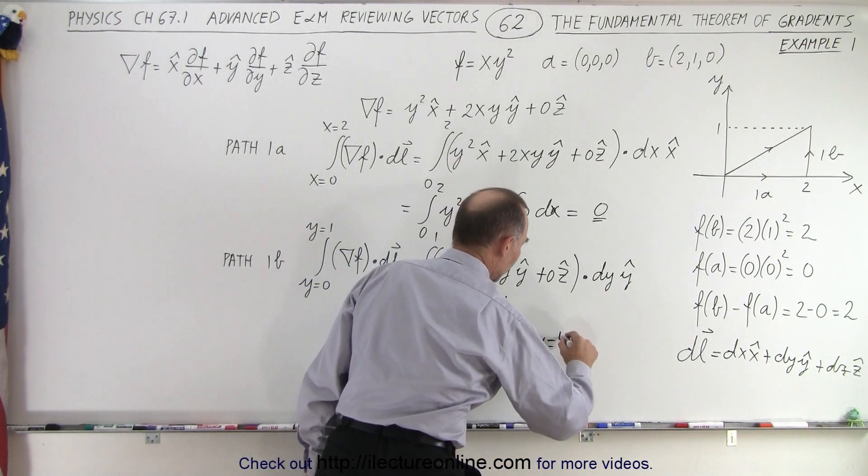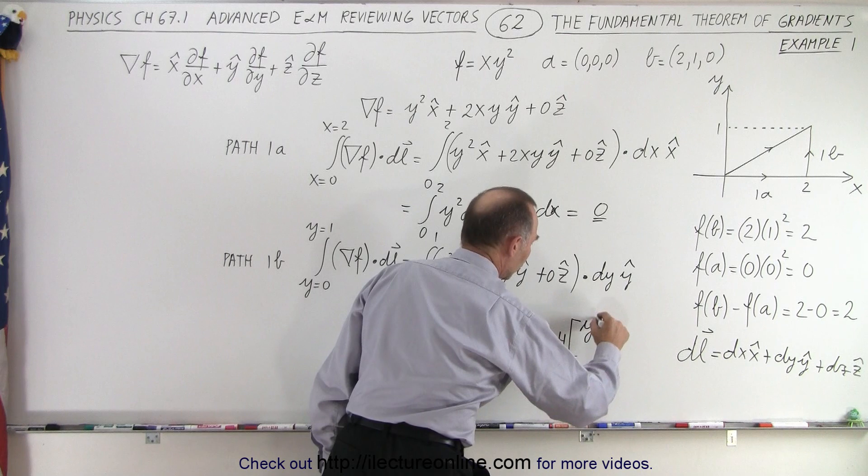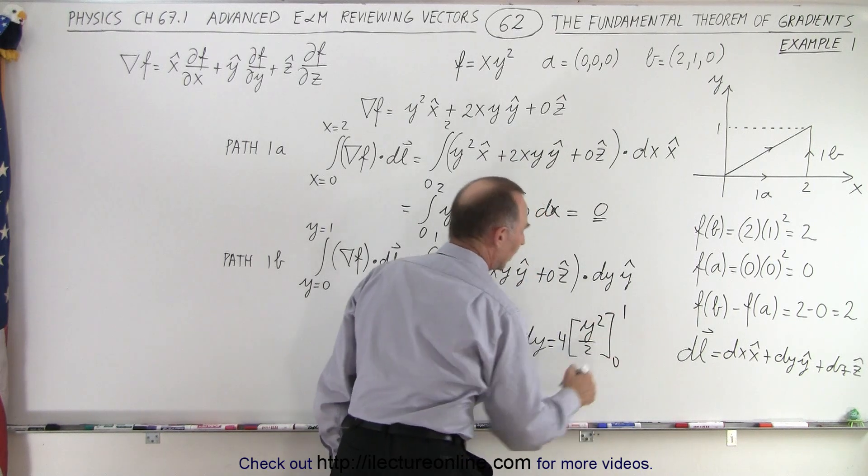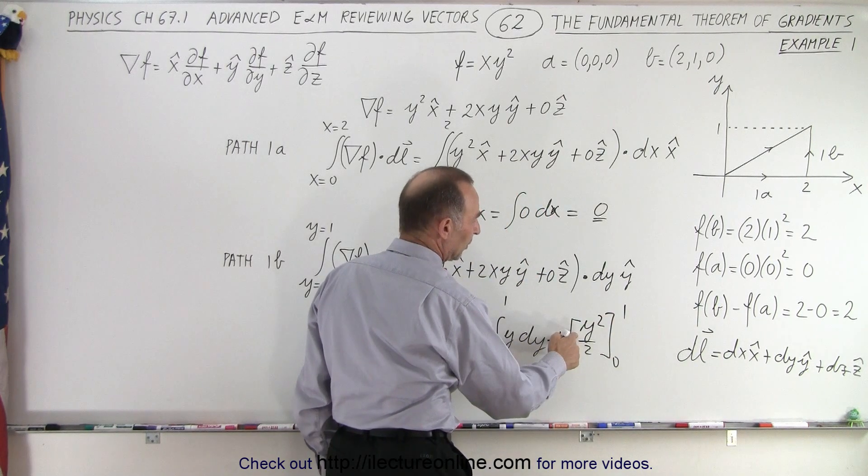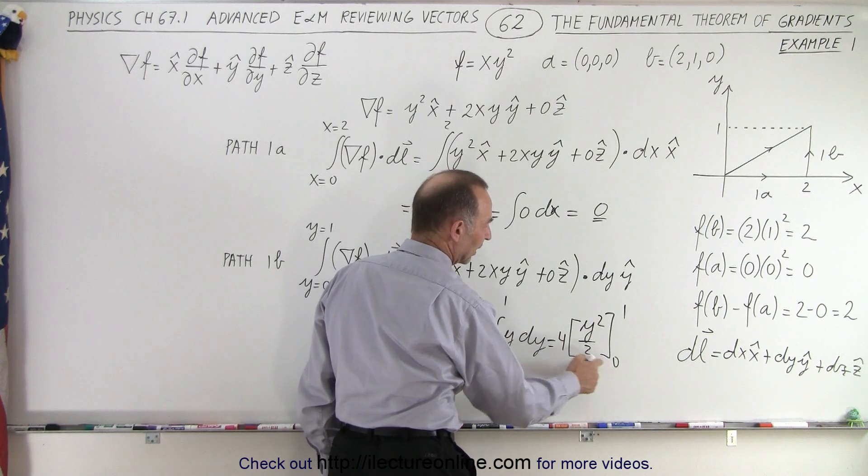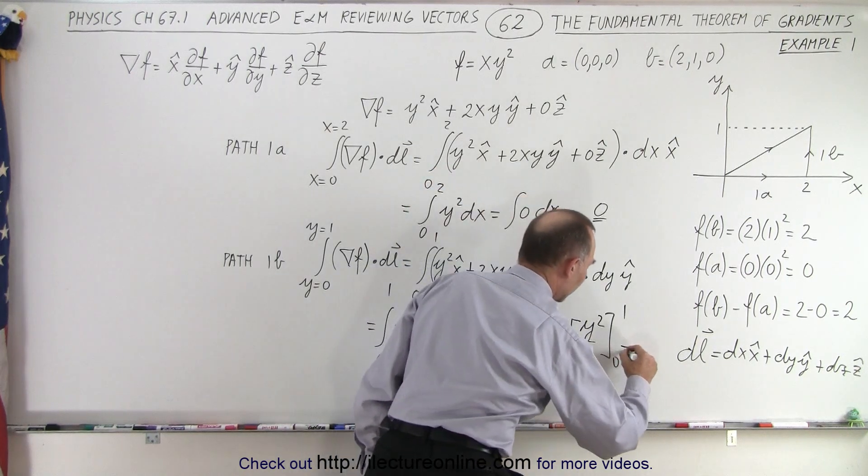So this is going to be 4 times y squared over 2 from 0 to 1. So this would be when we plug in the upper limit, we get 1 half. Plug in the lower limit, we get 0. 1 half times 4 is equal to 2.